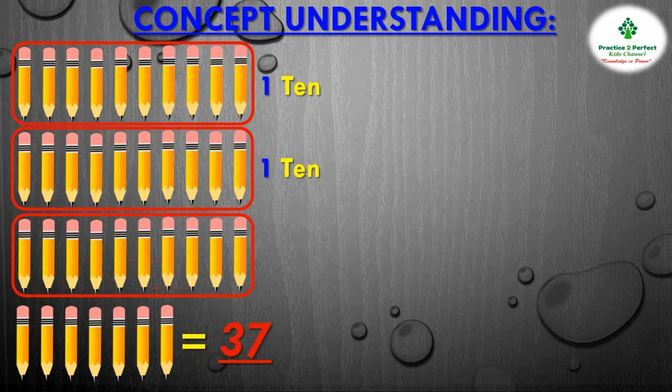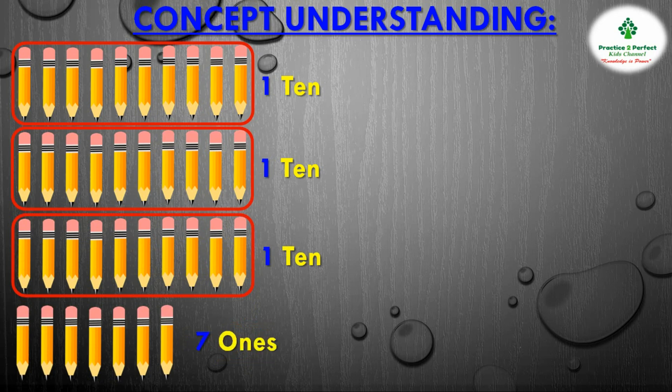Now let me count the remaining: 1, 2, 3, 4, 5, 6, 7. These are just 7 and they do not form a group of 10, so we don't circle it — this is only 7. These form the 7 ones. From the picture we can see there are 3 groups of 10s and 7 ones.